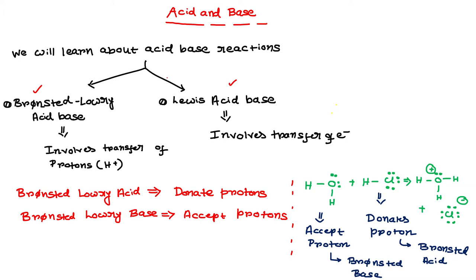In this lecture I am going to talk about the Bronsted-Lowry acid-base theory. According to the Bronsted-Lowry theory, acid-base reactions basically involve transfer of a proton — that is H⁺. Those chemicals which donate protons are called the Bronsted-Lowry acid, and those chemicals which accept protons are called the Bronsted-Lowry base.